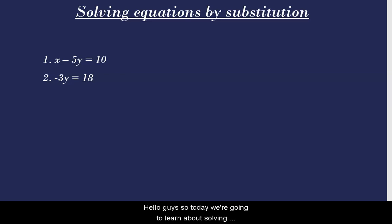Hello guys, so today we're going to learn about solving equations by the method of substitution. Looking at the equations I have here, you're looking at x minus 5y equals 10 and minus 3y equals 18. The idea here is to substitute one variable in terms of the other.